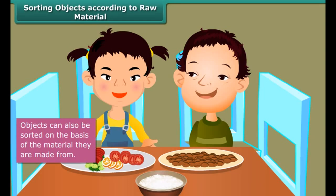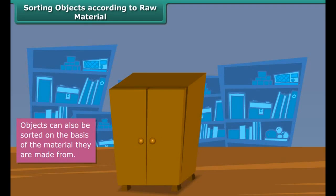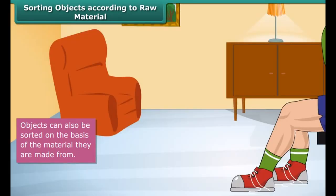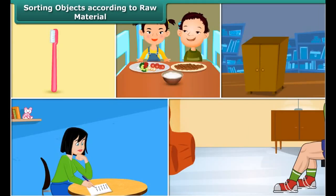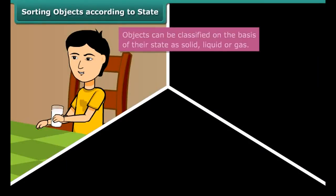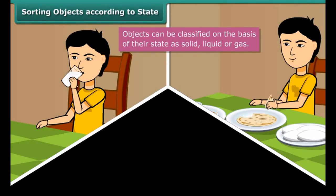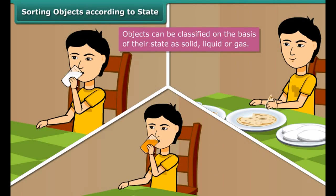The first object you use as soon as you wake up is your toothbrush — it is made of plastic. The plate you have your breakfast in is made of melamine or stainless steel. The cupboard you keep your books or clothing in is made of iron or wood. The books that you read are made of paper. The shoes you wear are made of leather, canvas, or rexin. Thus all the objects we use in our day-to-day life can be classified on the basis of the raw materials used in making them.